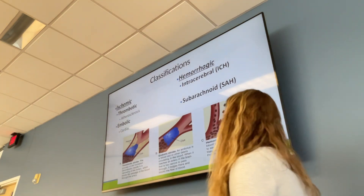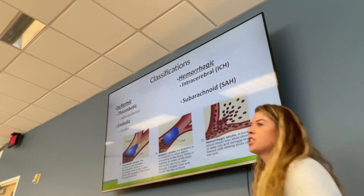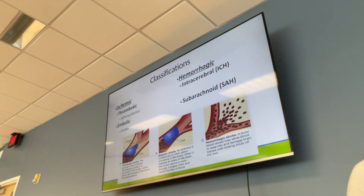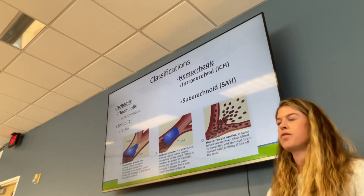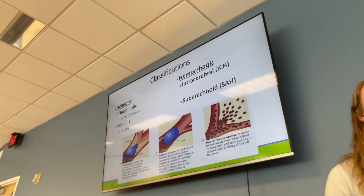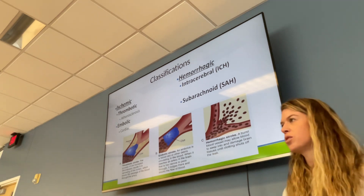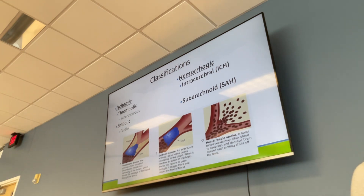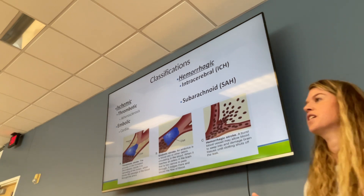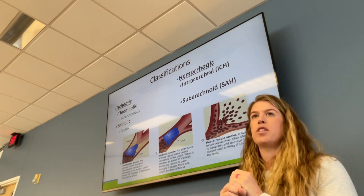Ischemic stroke is our blockage type. Thrombotic stroke is caused by atherosclerosis and accounts for about 60% of strokes. Overall, ischemic strokes make up about 87% of all strokes, so if you were on the stroke unit you probably saw mostly this type. Atherosclerosis increases stroke risk because existing plaque is already narrowing the vessel, increasing the likelihood of a blockage.